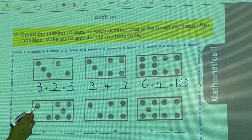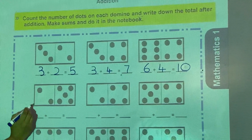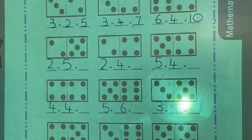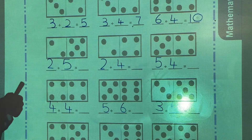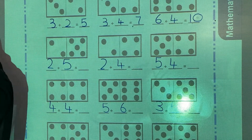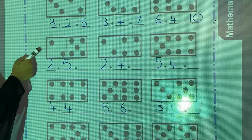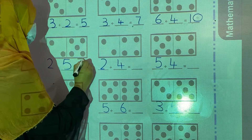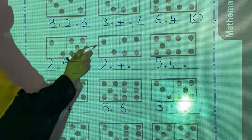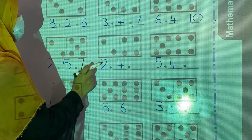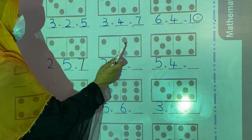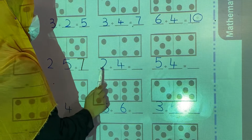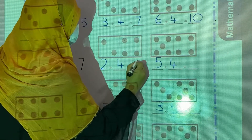Now the fourth one. Count: 1, 2. So 2 plus 5 is equal to 7. Next: 1, 2, and in the second box 1, 2, 3, 4. So 2 plus 4 equals 6.